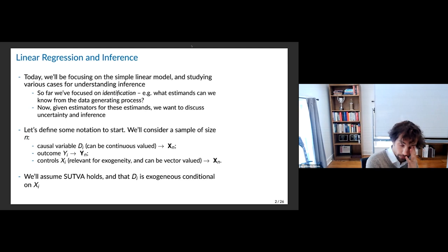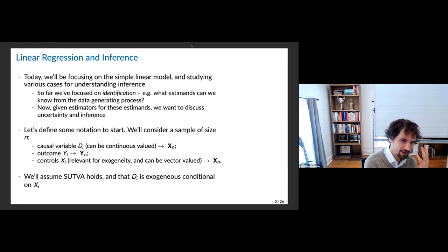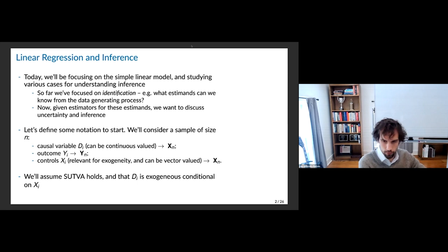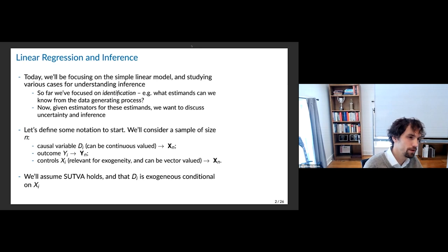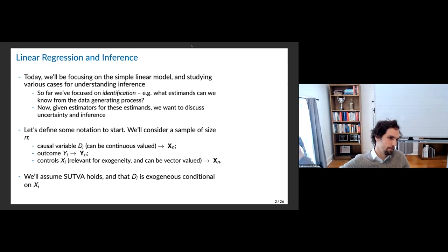So let's start with some notation. We're going to be thinking about some causal variable D_i, which could be continuous. A lot of times we're going to focus on the binary case. When I have bold symbols, the idea is just to denote that it's some sort of vector or matrix versus being the value for a single person. There's some outcome and some set of controls X_i, which sometimes we're going to be conditioning on. We're not going to worry too much about the controls, but they obviously show up when you do linear regression — sometimes as fixed effects, sometimes as linear continuous controls.